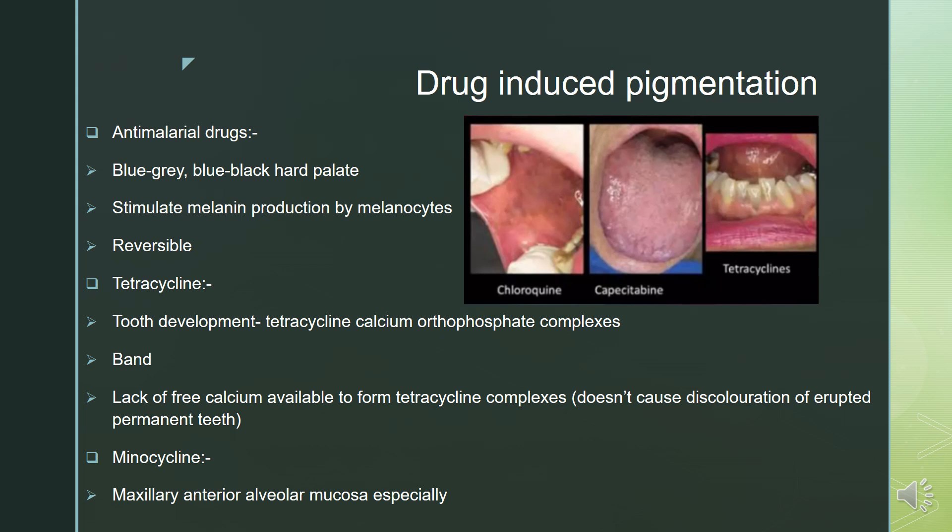About a few important drugs causing pigmentation: anti-malarial drugs like chloroquine induce a blue-gray or blue-black pigmentation over the hard palate by stimulating melanin production by melanocytes. They are reversible — the pigmentation goes away after cessation of the drugs. Tetracycline forms bands over the tooth surface, forming tetracycline-calcium or phosphate complexes during the period of tooth development. After eruption of permanent teeth, there is lack of free calcium, so it doesn't cause discoloration of erupted permanent teeth.